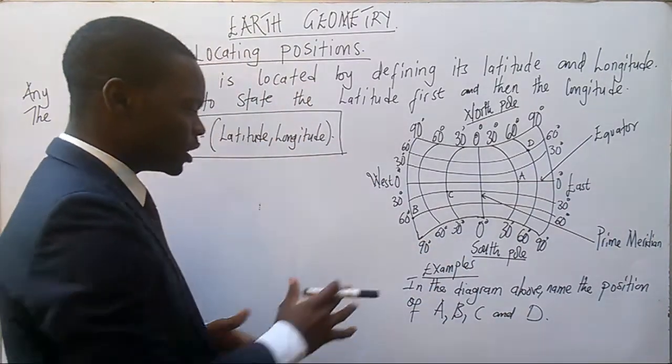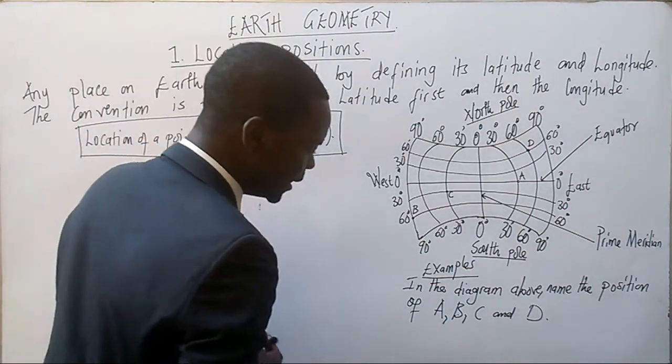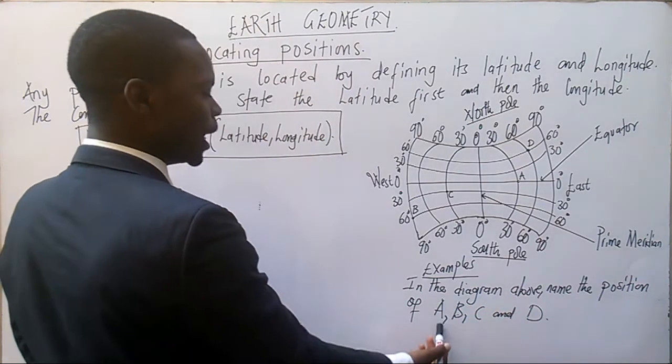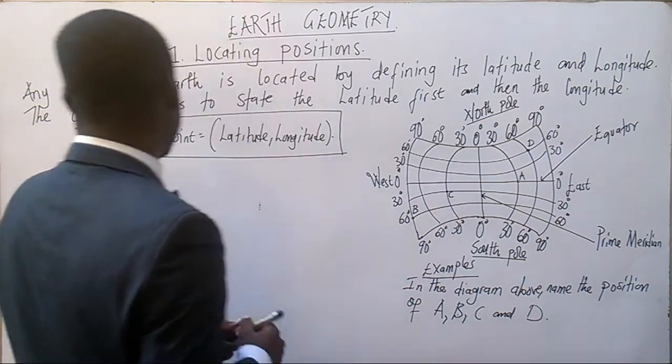Thereafter, we have got these examples, which is saying in the diagram above, name the position of A, B, C, and D.